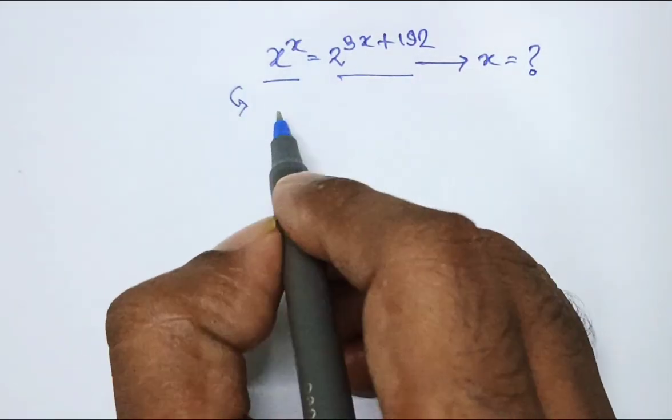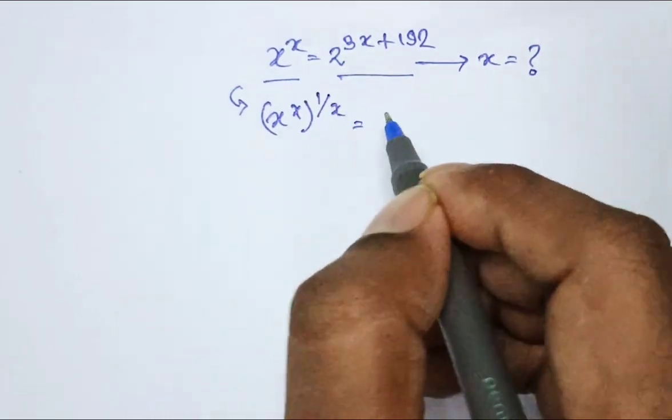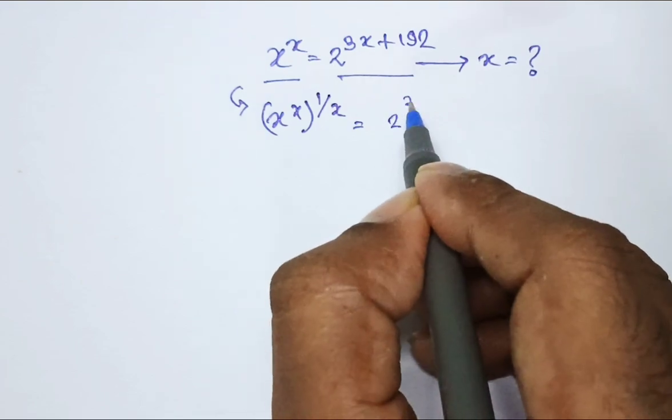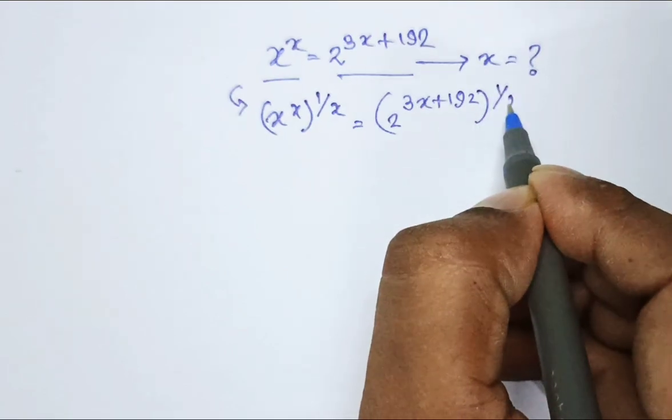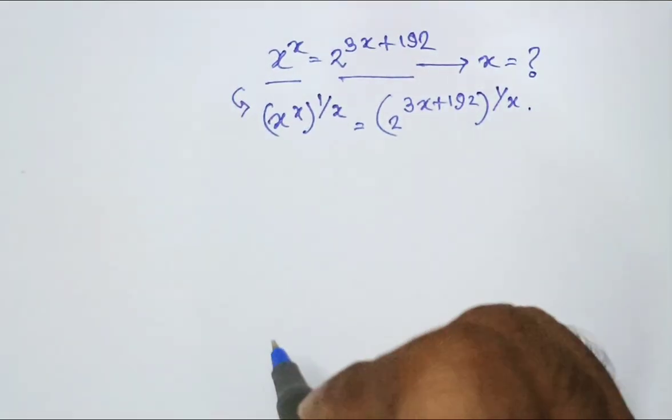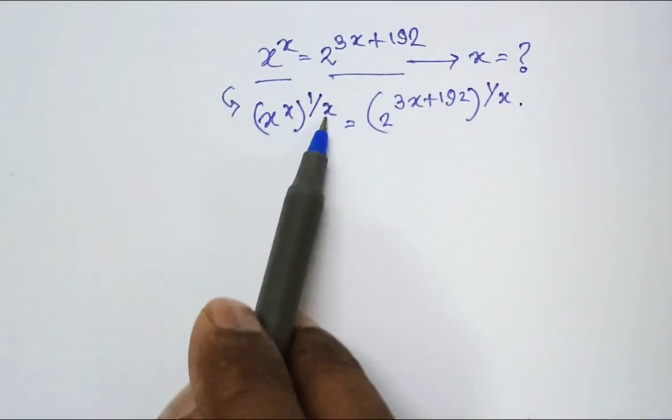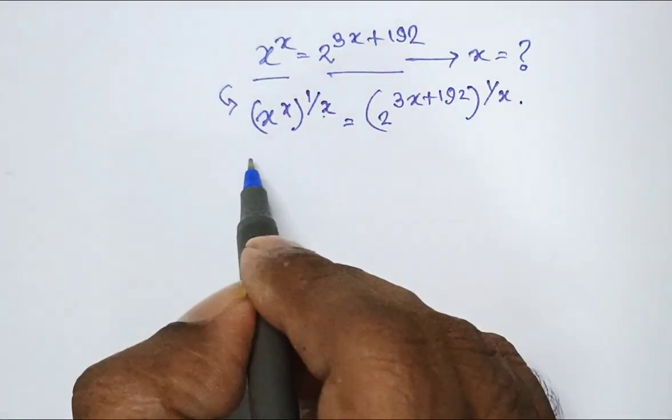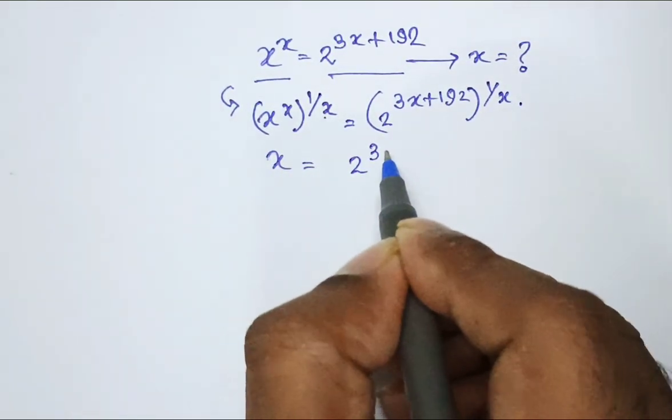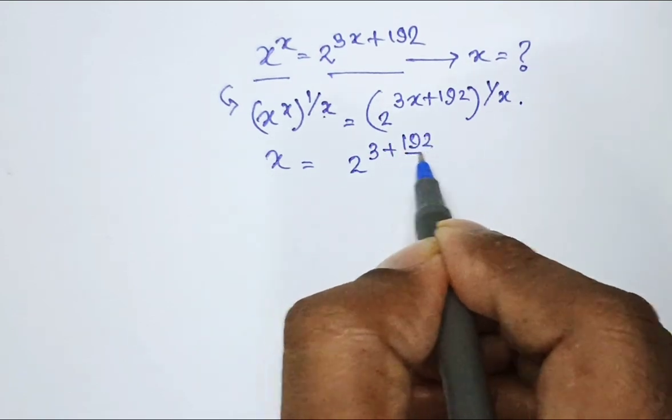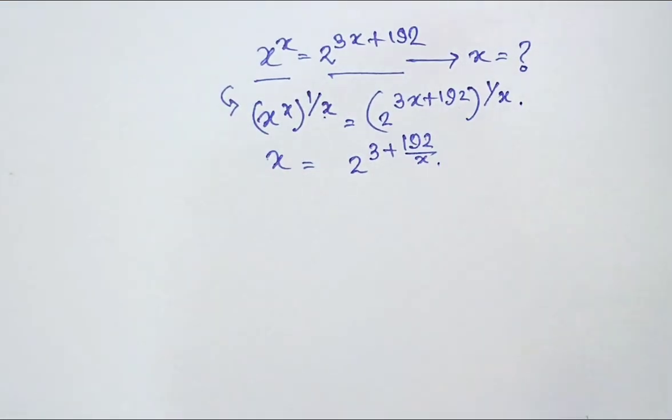From here I am writing it as x to the power x whole to the power 1 by x equal to 2 to the power 3x plus 192 whole to the power 1 by x. I am doing whole to the power 1 by x in both sides. Now obviously x and x gets nullified. So left side becomes x and right side becomes 2 to the power 3 plus 192 by x. The entire index is being divided by x.